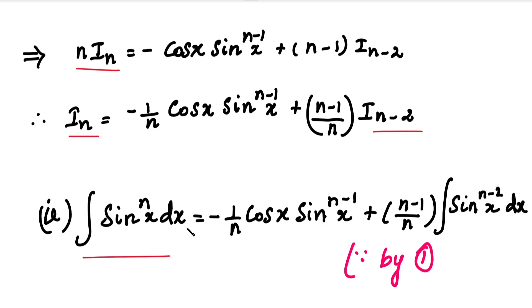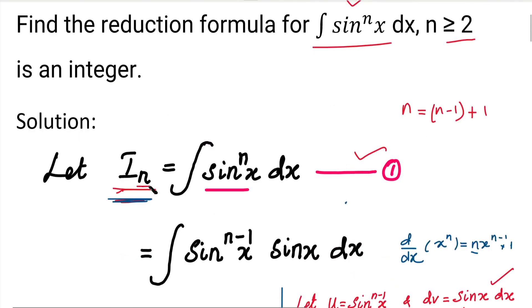The final reduction formula is: I_n = minus cos(x) sin^(n-1)(x) divided by n, plus (n-1)/n into I_(n-2).